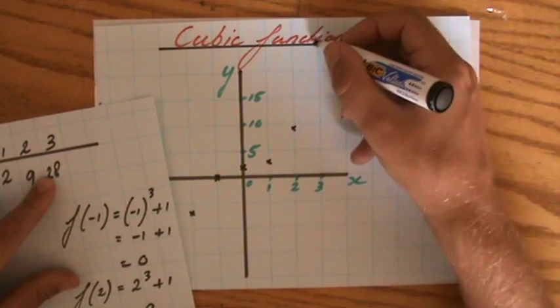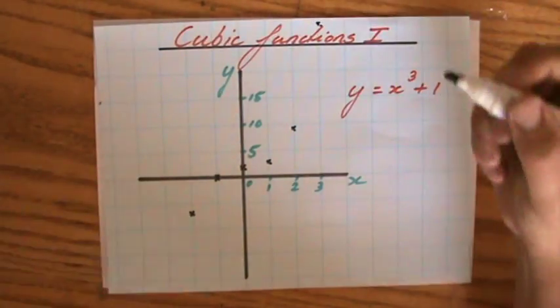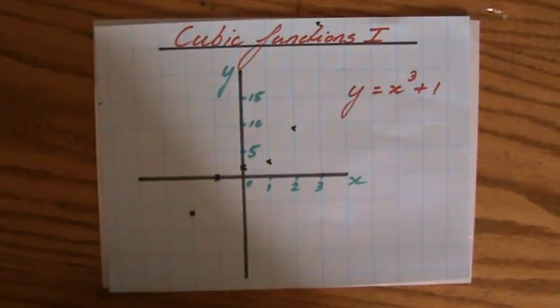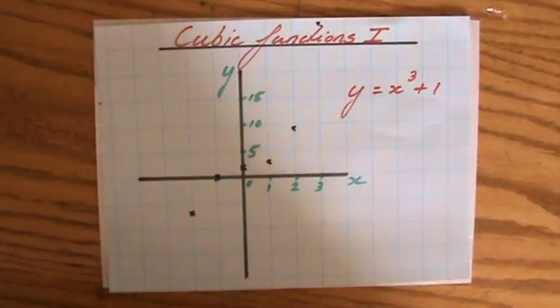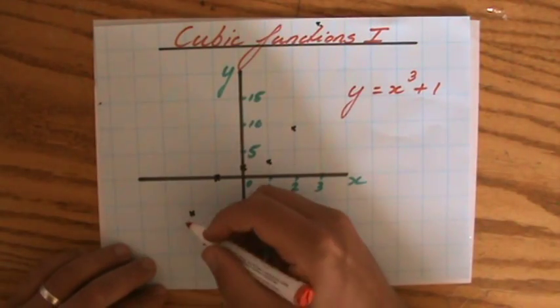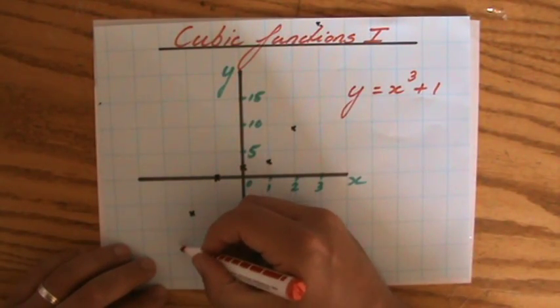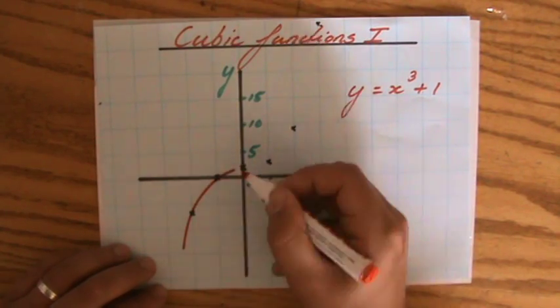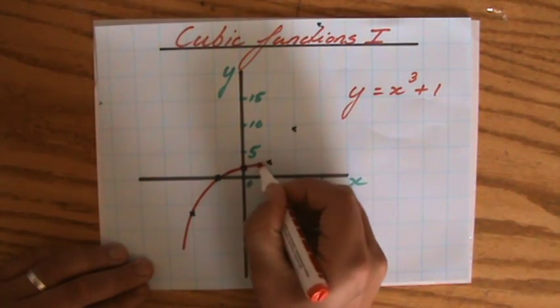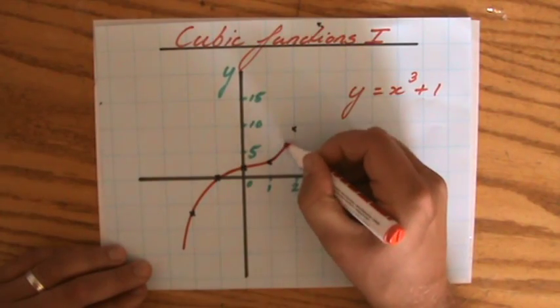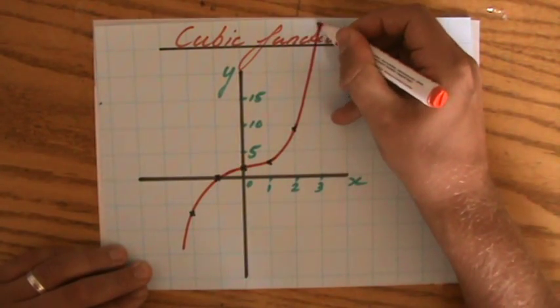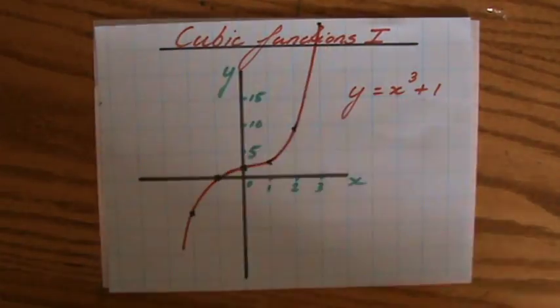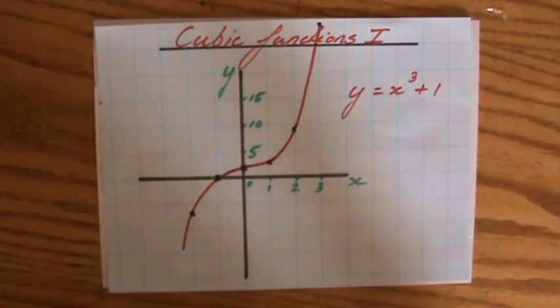5, 10, 15, 20, 25. All the way over there. And if I sketch it, or not sketch it, if I draw the graph, then one smooth curve through the points. Look at that beautiful cubic function. You see the S there? It is fantastic.